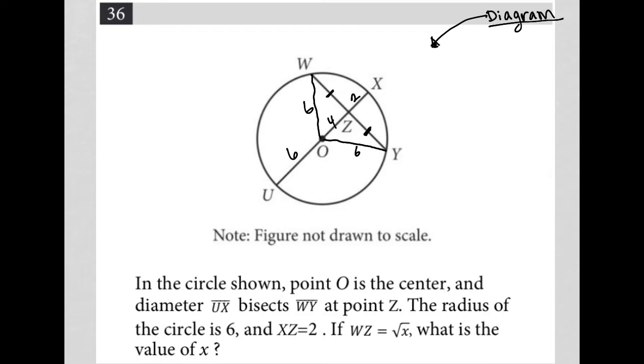If WZ is the square root of X, okay, so that means this is root X, but that also means that Z to Y is root X, because those two sides are equal, or those two lengths are equidistant. What is the value of X?